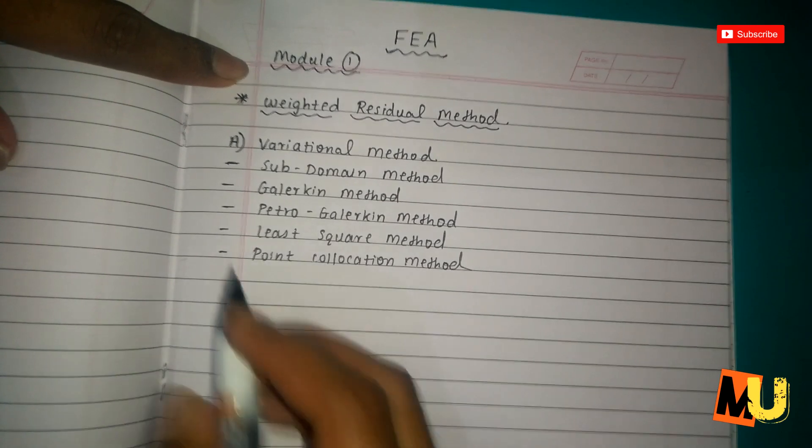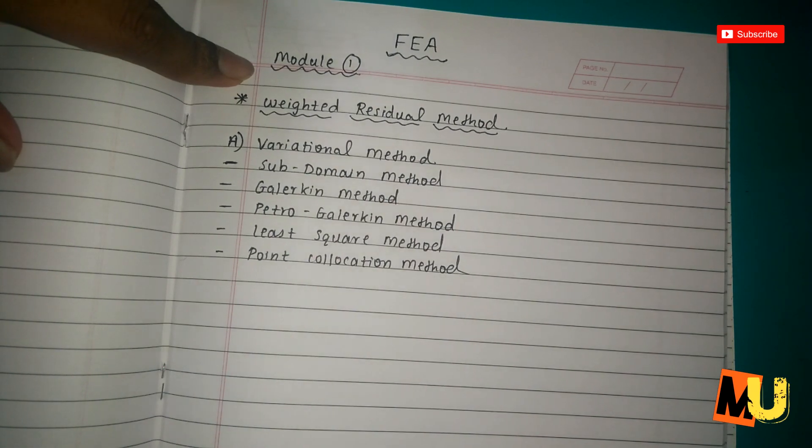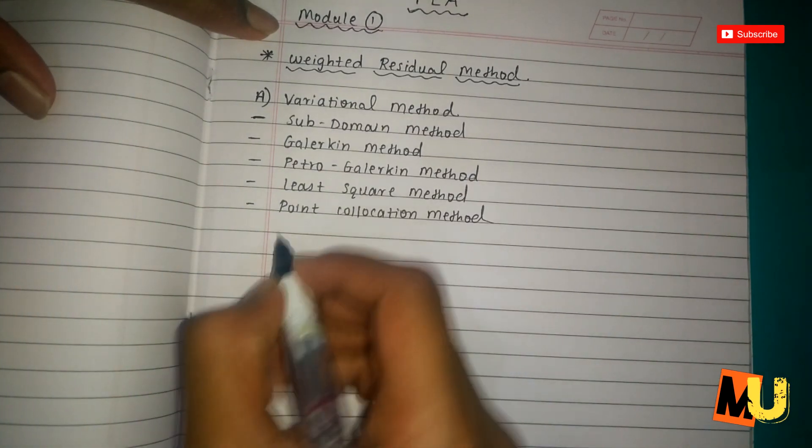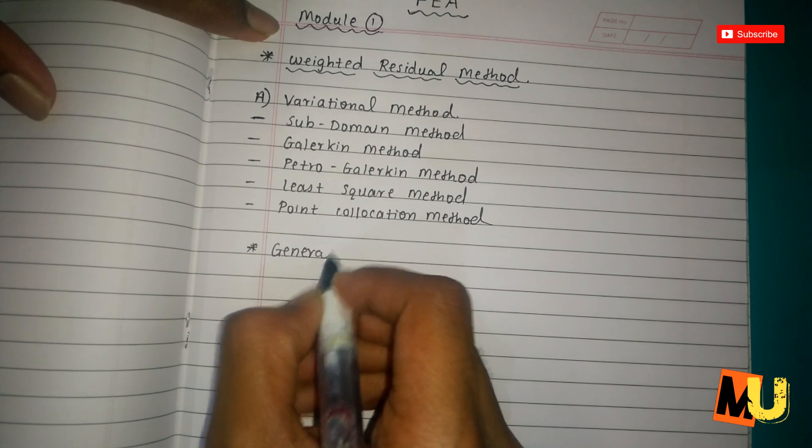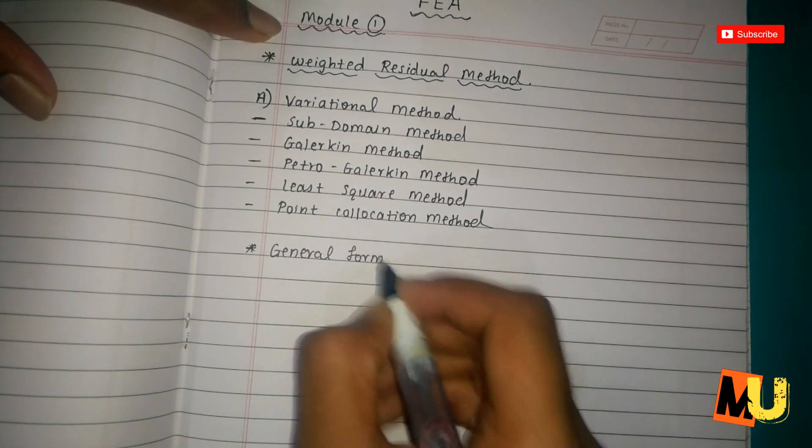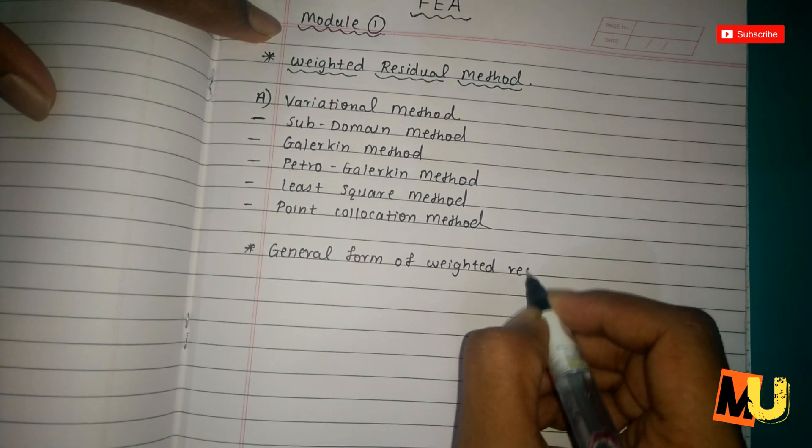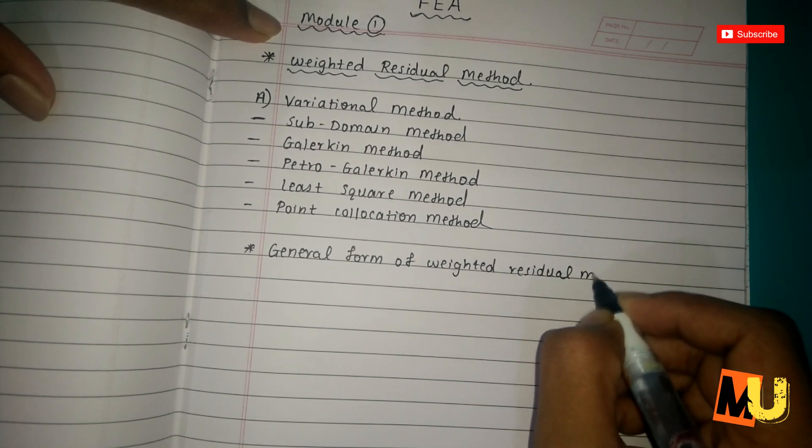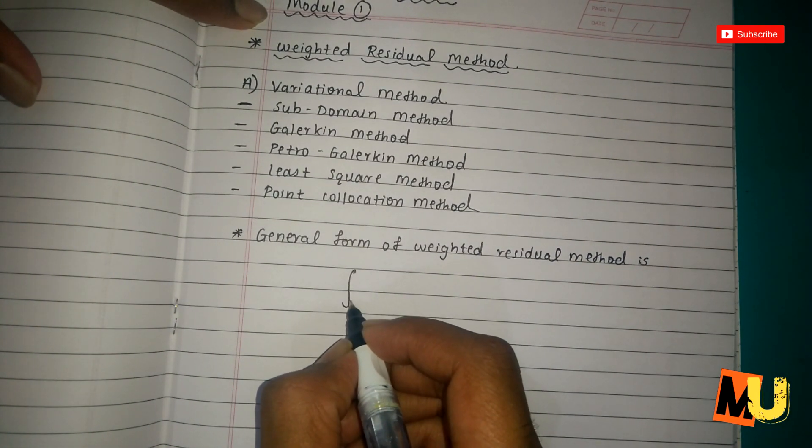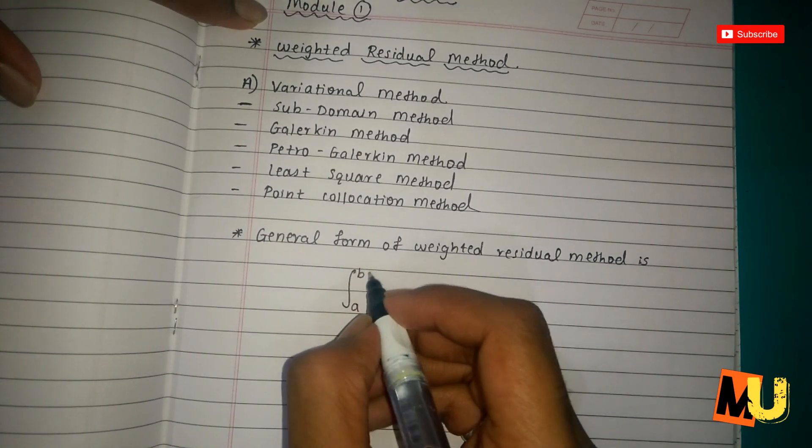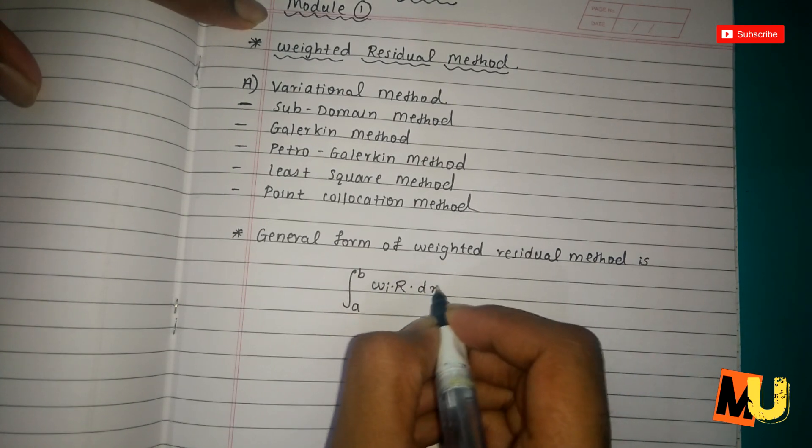I will be teaching all these five types to you. The general form of weighted residual method is integral from a to b of w_i times r dx equals 0.